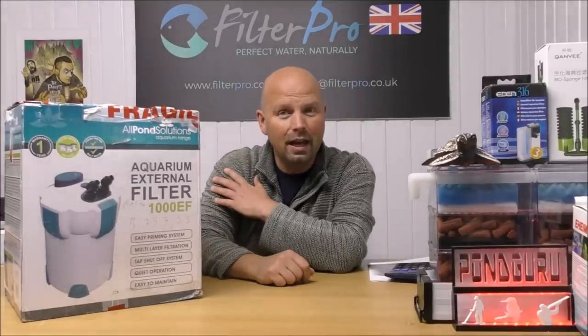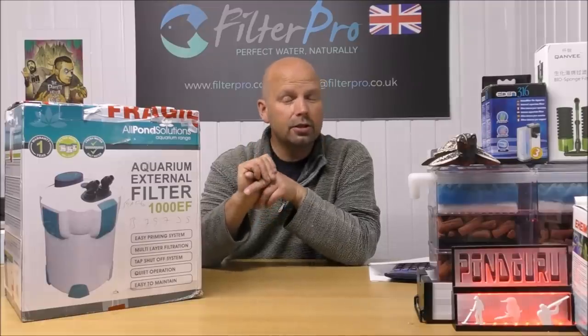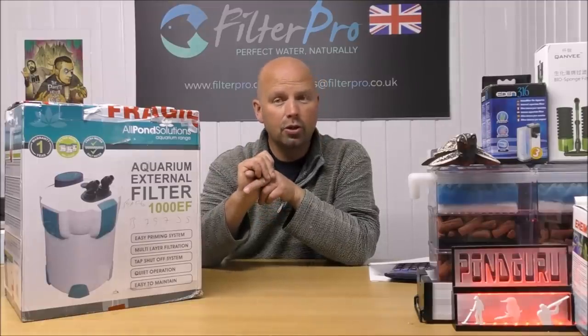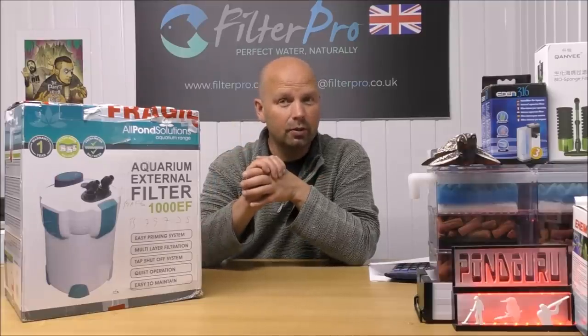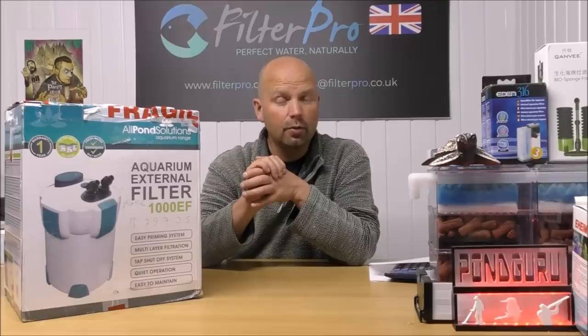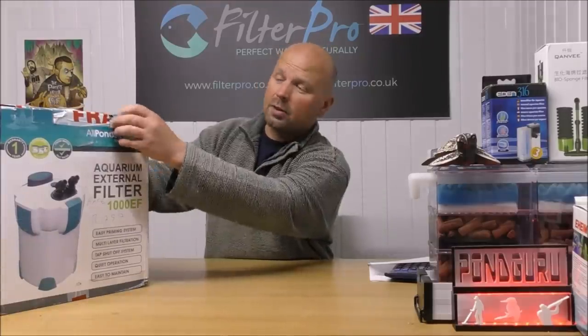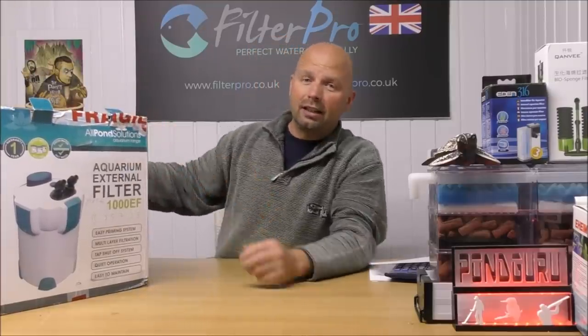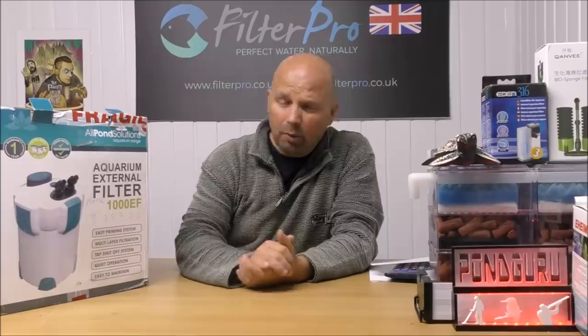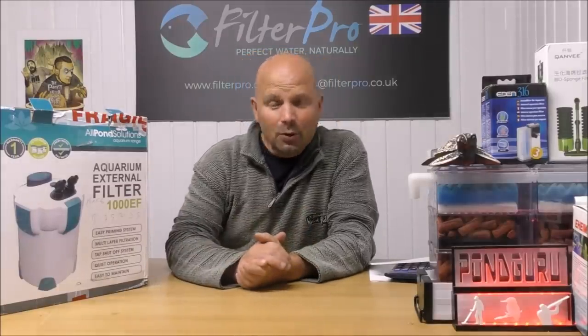This is the All Pond Solutions 1000 EF also known as Sun Sun 302 and there's a variant with UV lighting which is called Sun Sun 302 B. All those different names basically describe the same filter so when I see people online arguing about the All Pond Solutions filters being better than the Sun Sun filters or vice versa I do get a chuckle out of that because they're exactly the same filters just marketed under different names.